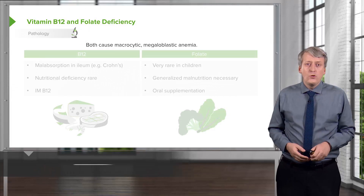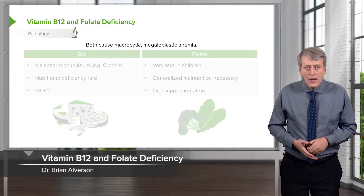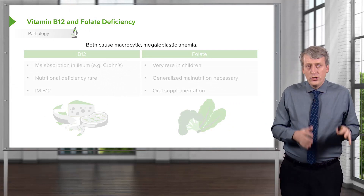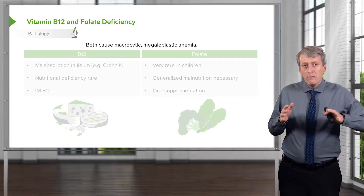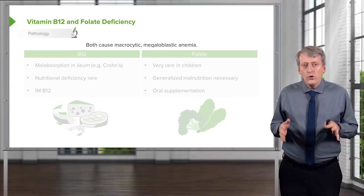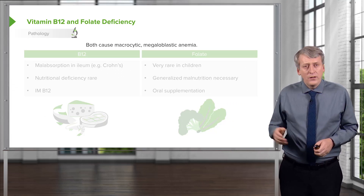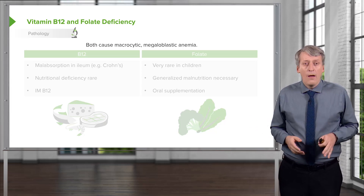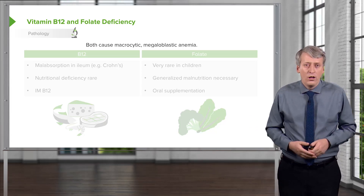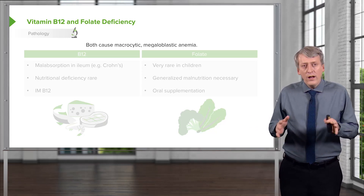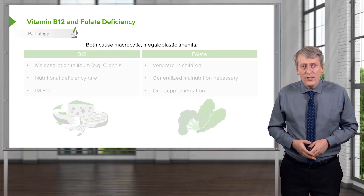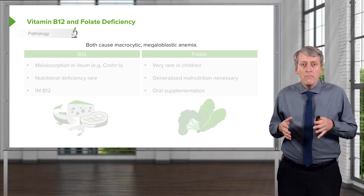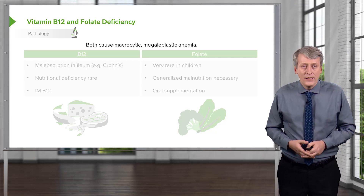Vitamin B12 and folate deficiency is much more common in adults than in children, because B12 and folate are fairly ubiquitous in the diet. We typically think of this as a problem in adult alcoholics, though it could happen in a severe teen alcoholic. Deficiencies of these two nutritional elements cause a macrocytic megaloblastic anemia.